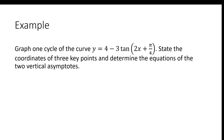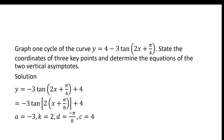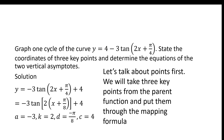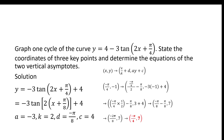Let's go through the steps. When y equals negative 3 tan of (2x + pi/4) + 4, the first thing we need to do is factor out the 2. We get: a equals negative 3, k equals 2, d equals negative pi over 8, and c equals 4. Of course, before we did that, we moved the 4 over to the end. Now we're going to talk about the three key points first — we're going to take three key points from the parent function and put them through the mapping formula.